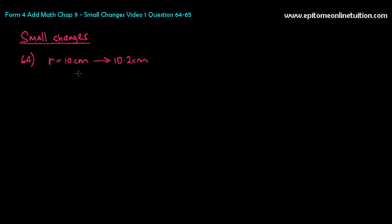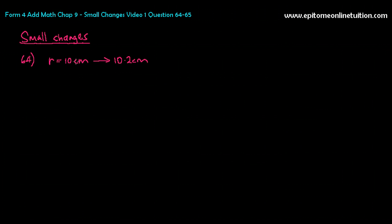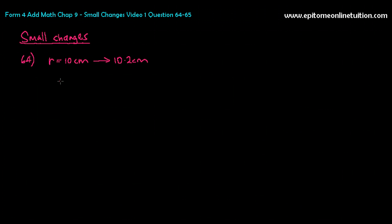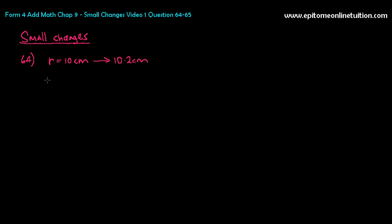In the previous lessons on rates of change, the question would say the radius increases at a rate of 2 cm per second — there's always the word 'rate,' and there's always time involved. Here it just says the radius increased from 10 to 10.2 cm, no per second. So this is small changes. The first thing you extract is: the radius has changed 0.2 cm, so delta R equals 0.2.